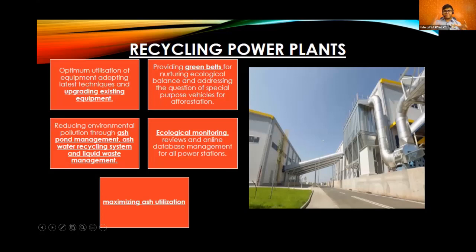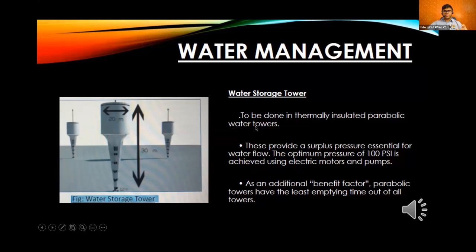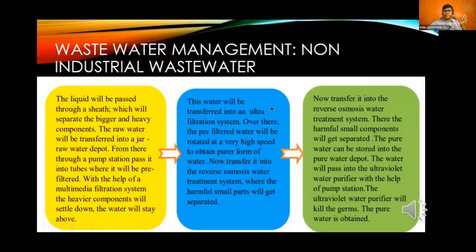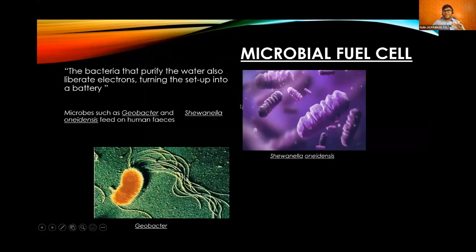For recycling power plants, we identified five guidelines all plants must follow, including maximizing ash utilization. For water management, we identified an optimized shape for water storage towers currently used in Delhi, with three key benefits. The system integrates permeable pavements, biodiverse green roofs, and more. Non-industrial wastewater treatment involves three steps of biochemical processes leaving the water very clean. We will also use an idea initially suggested by Bill Gates — using microbial fuel cells of certain bacteria to purify water contaminated by human feces into drinking water while also generating energy in the process.